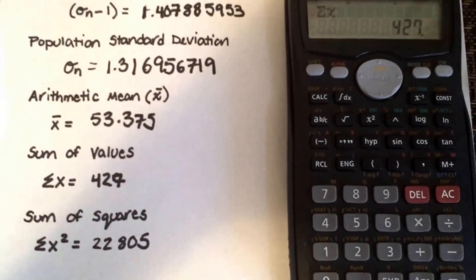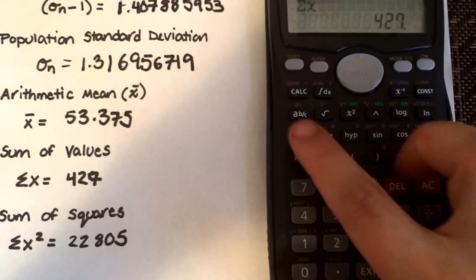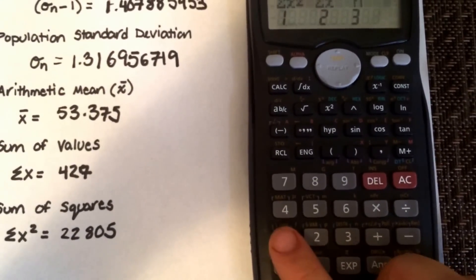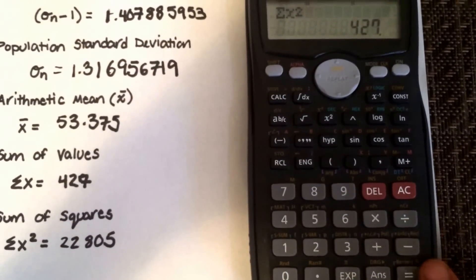And last but not least, the sum of the squares is also there. So shift, stat variable, number one, hit enter.